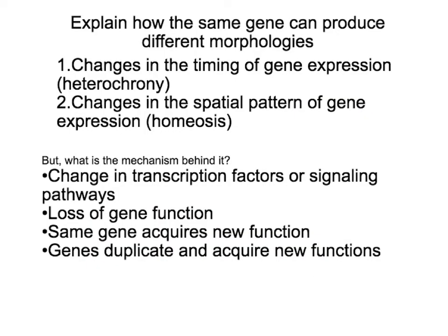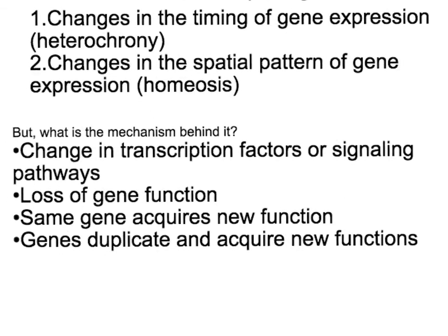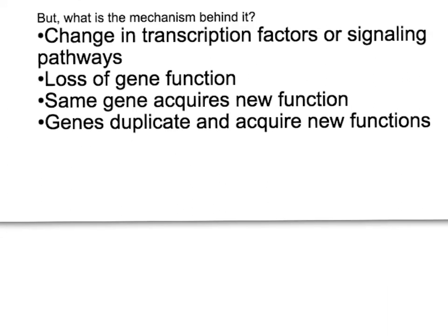We've talked about how changes in the location or timing of expression of developmental genes can result in different morphologies. Now we're going to analyze the molecular mechanisms causing those changes. One possible change is that transcription factors can no longer bind to the usual promoters, or now bind to new promoters. Another possibility is loss of function — the gene that was supposed to be activated no longer works. It can also be that the same gene now has a new function and activates a different developmental pathway. Finally, genes can duplicate through evolutionary time, and those duplicates are then available to acquire new functions.